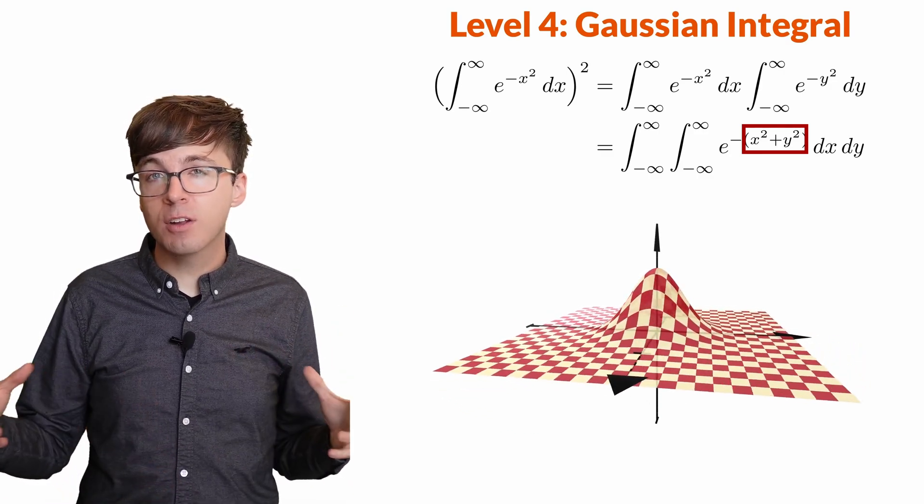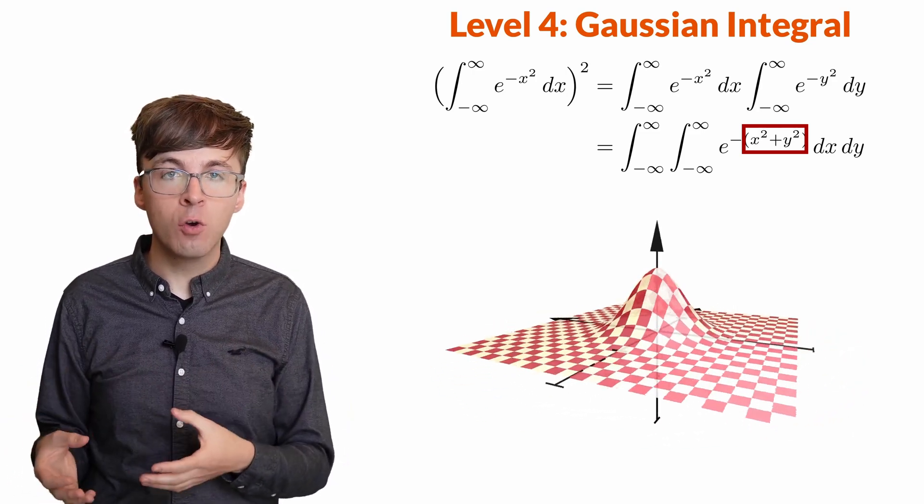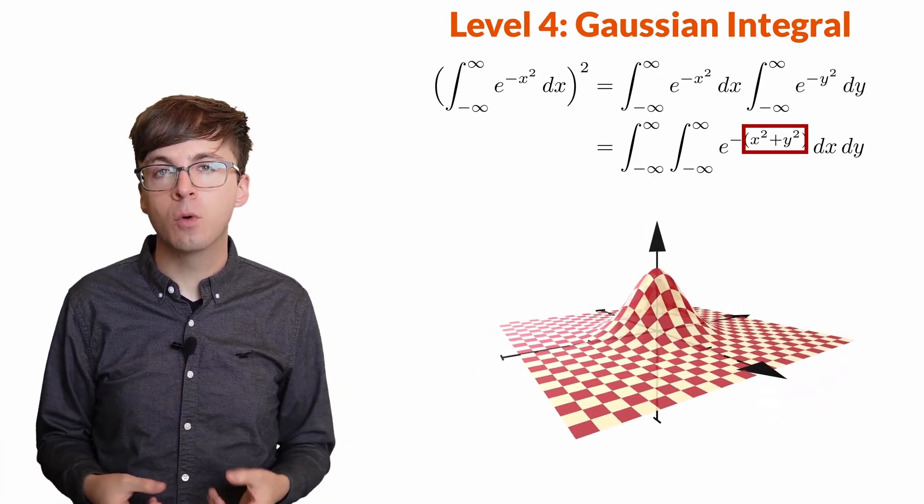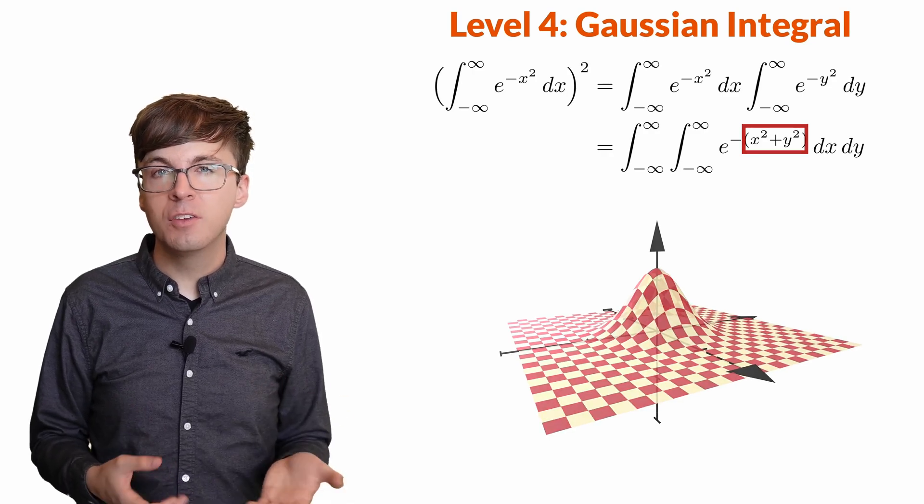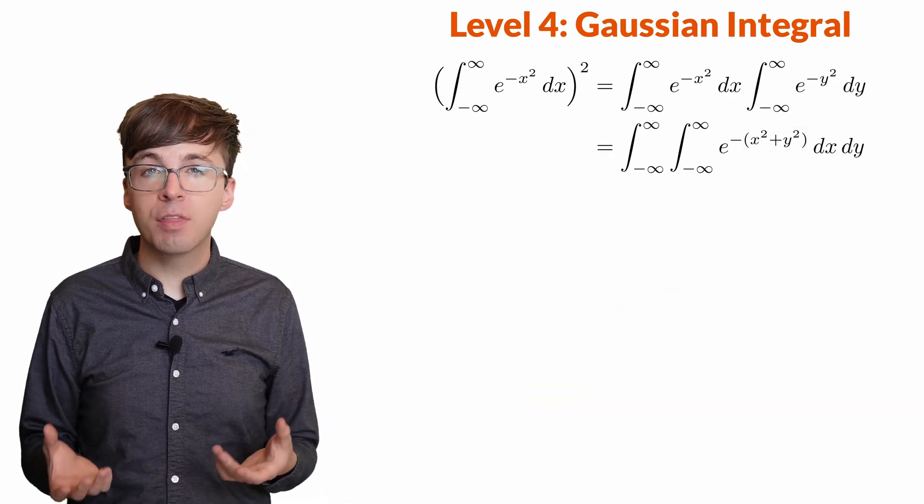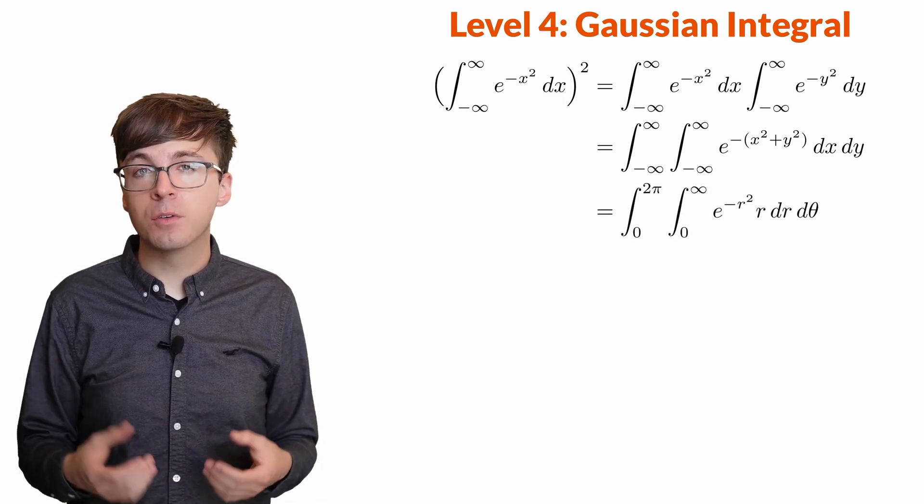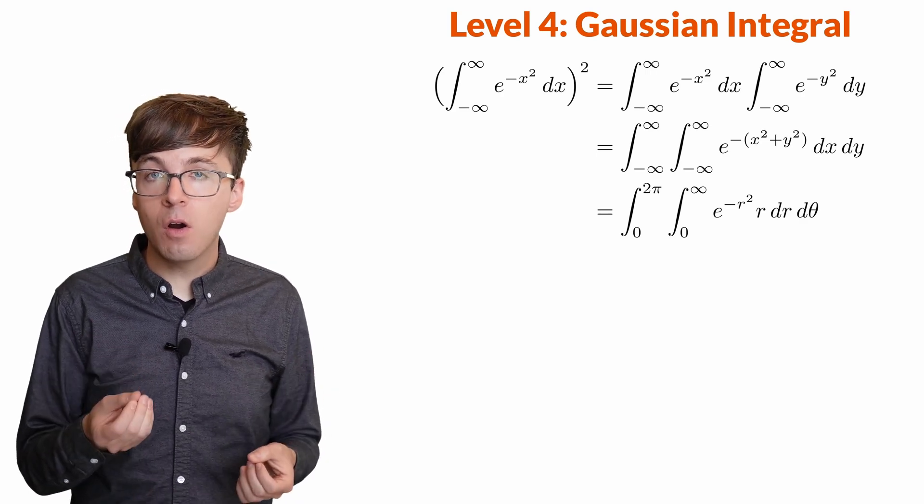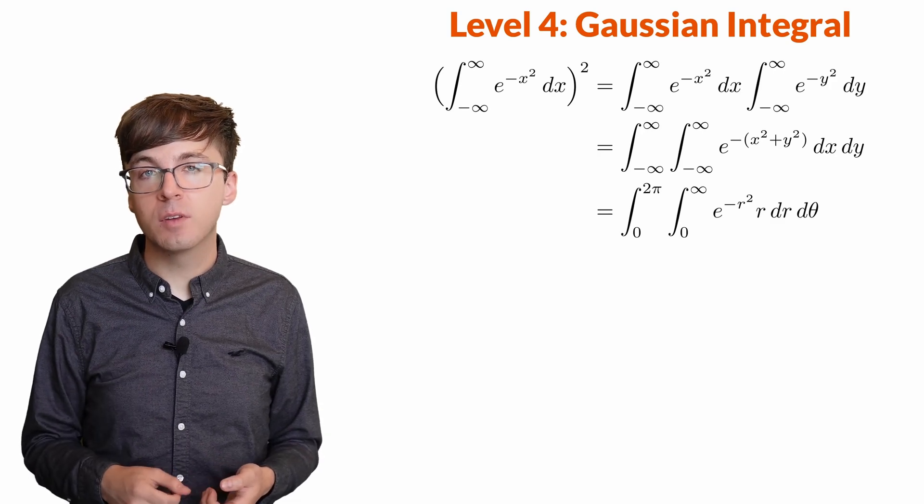So we need to multiply by the Jacobian, which is like the stretching factor for how areas transform in this new coordinate system. For polar coordinates, the Jacobian is r. So we take the integral of the angle θ from 0 to 2π of the integral of r from 0 to infinity of e^(-r²) times r dr dθ. That r allows us to do a u-substitution.